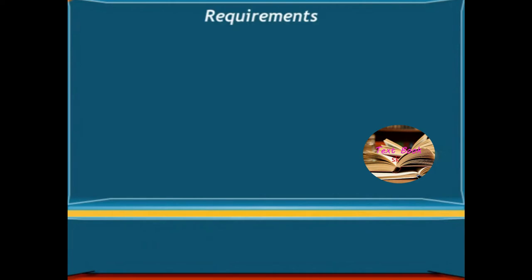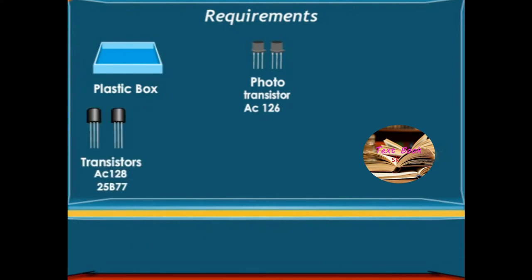Requirements: One plastic box, one photo transistor AC126, one transistor AC128, one transistor 25B77, one relay 6V and 3-5mA, two capacitors, one 0.5mF and the other 0.1mF.